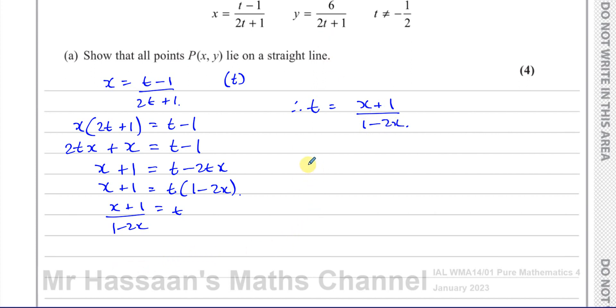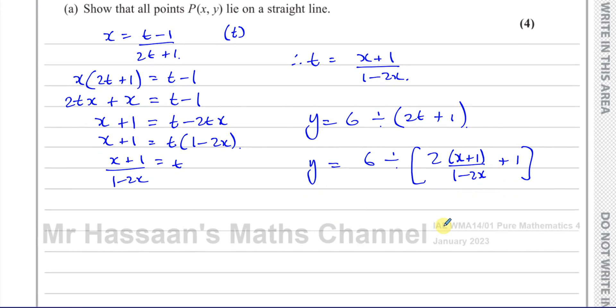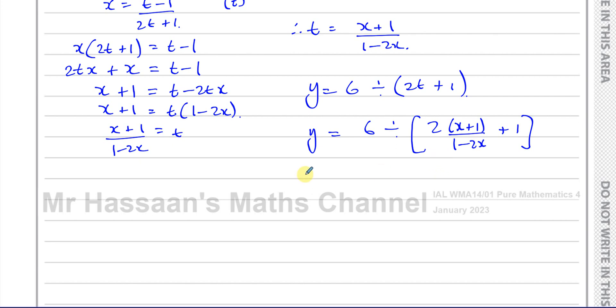Now I can take this equation Y = 6/(2t+1) and replace the T with (x+1)/(1-2x). To make it easier, I'll write Y equals 6 divided by 2T plus 1. So Y = 6 ÷ [2(x+1)/(1-2x) + 1]. I'll just replace the T with this. Now I have eliminated the T's from it. I've got Y in terms of X, but I have to simplify it and show that it's linear.